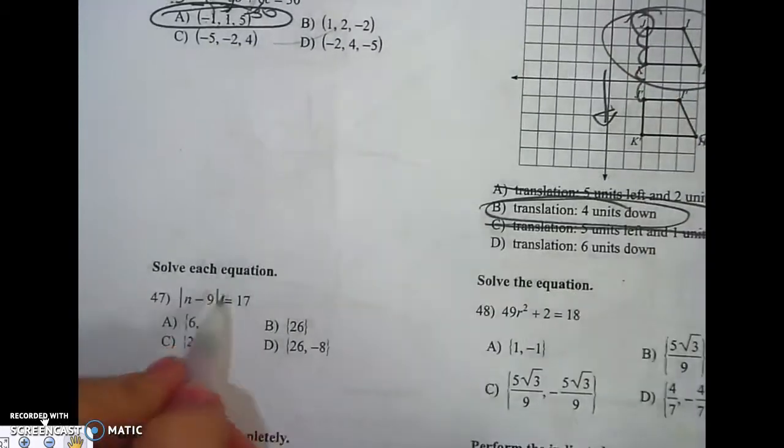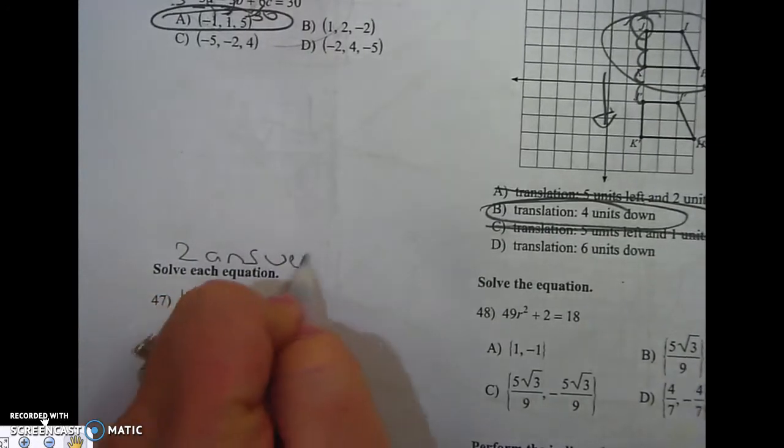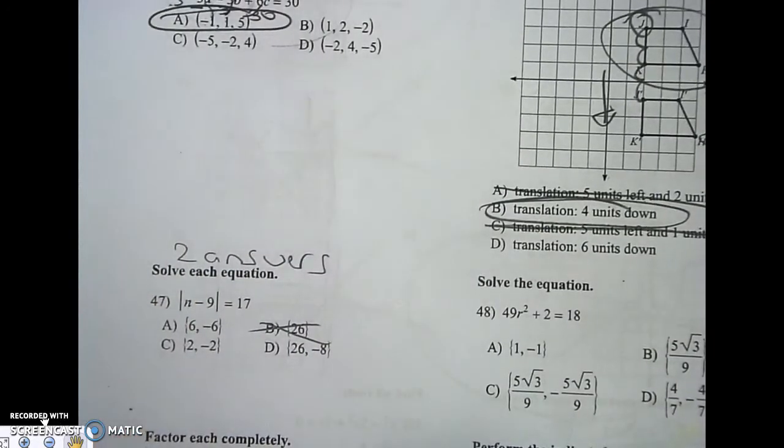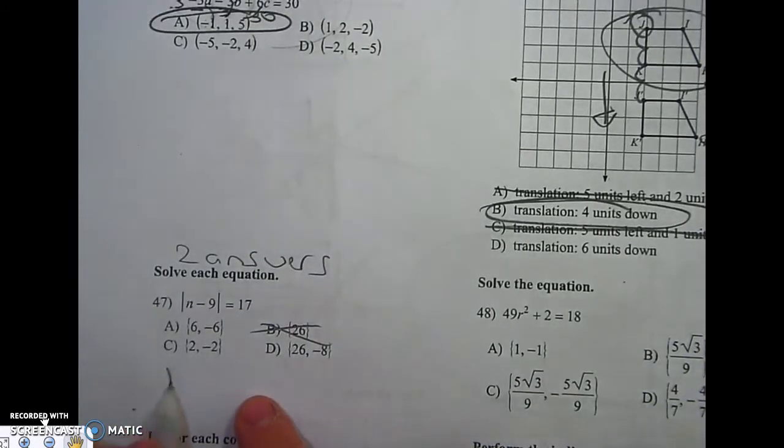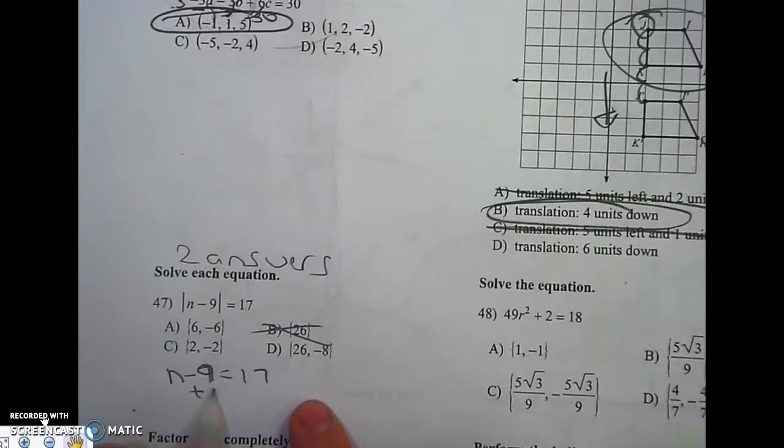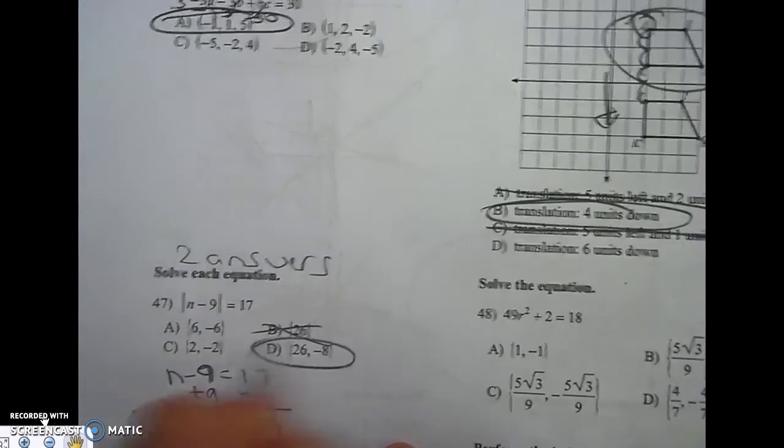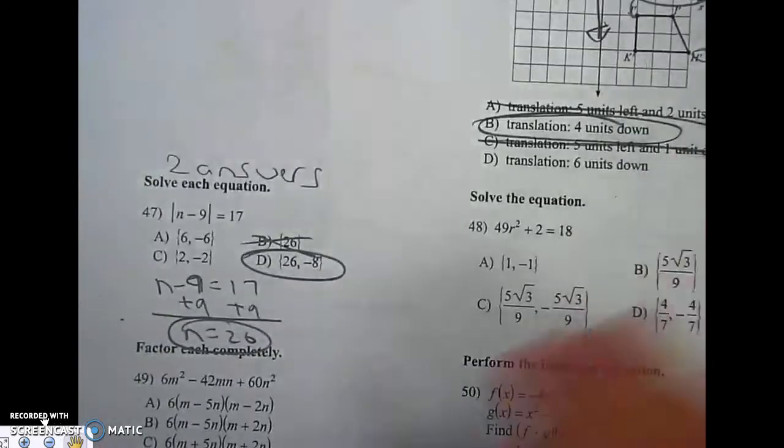Solve each equation. Whenever it's absolute value, I'm always going to have two answers. So B is out. So what I do is I drop the bars. Oops, that's a 9. And I solve. I know one of the answers is 26. I know it's D. But let me show you.